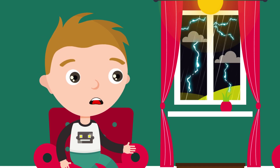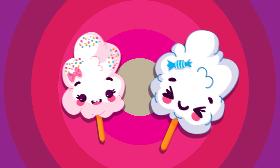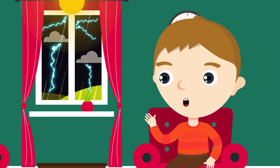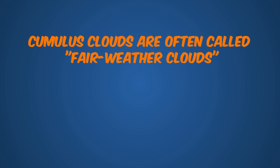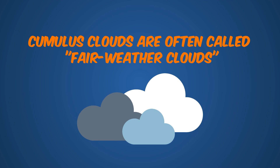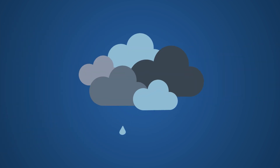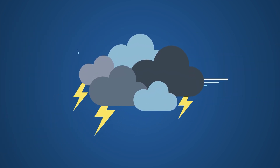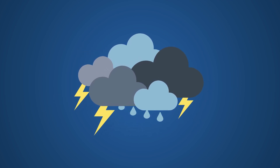Cumulus clouds are white, puffy clouds that look like pieces of floating cotton. Although they do look similar to cotton candy, cumulus clouds are often called fair-weather clouds. The base of each cloud is flat and the top has rounded towers. The tops of cumulus clouds look like the head of a cauliflower. These clouds grow upward and can develop into giant cumulonimbus clouds, which are thunderstorm clouds.